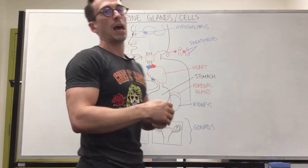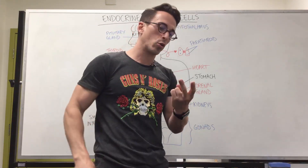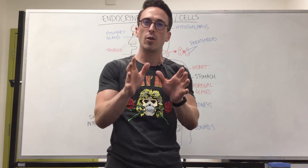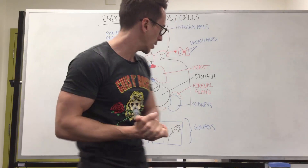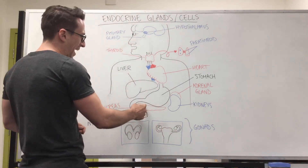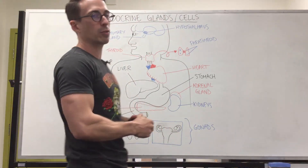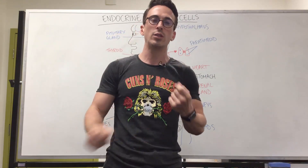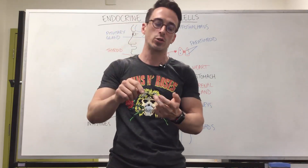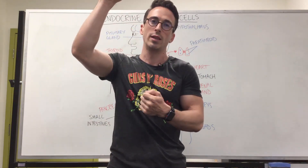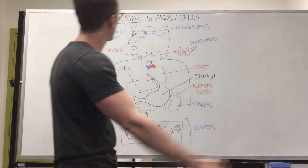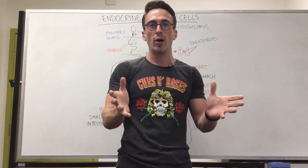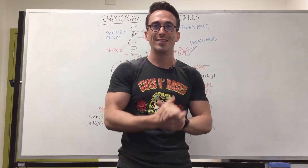The adrenal glands have the mineralocorticoids and the glucocorticoids — there are too many to discuss right now but I have done a video on it, so please take a look. And we've got the pancreas, which can release insulin and glucagon. Insulin is released when blood sugar levels are high; glucagon is released when blood sugar levels are low. So this is a quick run-through of the endocrine glands, cells, and some of the hormones and functions that they have.